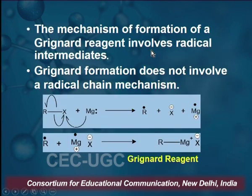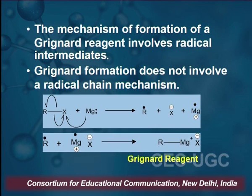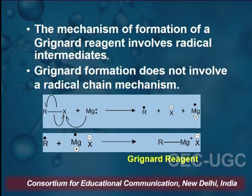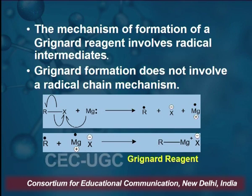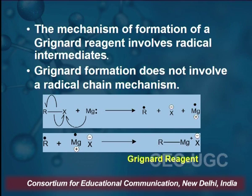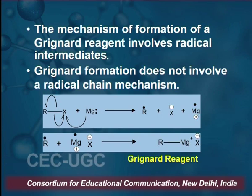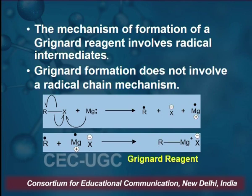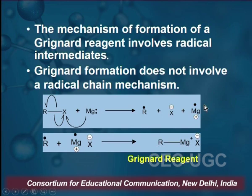The mechanism of Grignard Reagent formation involves a radical intermediate, but does not involve any radical chain mechanism. The mechanism involves homolytic cleavage of the R-X bond, and reaction with magnesium. Magnesium imparts one electron to the halogen X, which is eliminated as X⁻, and R becomes an R radical. There is then formation of a radical cation of magnesium, and then this X⁻ and the radical cation react with the R radical to give the Grignard Reagent.